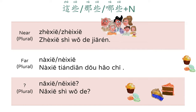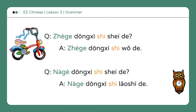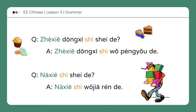哪些是我的? Which ones are mine? 这些是谁的? Whose are these? This is mine. Whose is that? That is the teacher's. Whose are these? These are my friends. Whose are those? They are my family's.